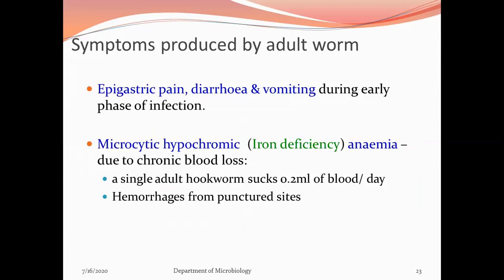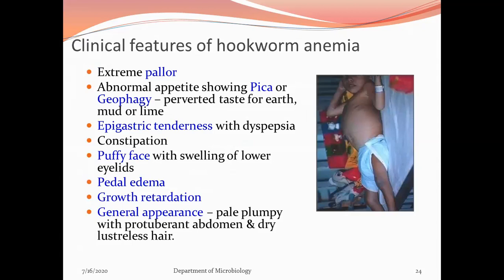Clinical features of worm anemia include extreme pallor, abnormal appetite (pica or geophagia — craving for earth, mud, or lime), epigastric tenderness with dyspepsia, constipation, puffy face with swelling of lower eyelids, pitting edema, growth retardation, and general appearance of pallor with pulmonary embolism and dry, brittle nails.